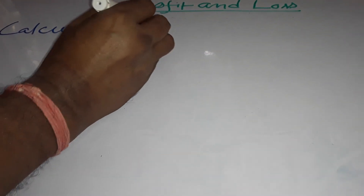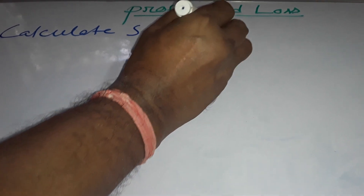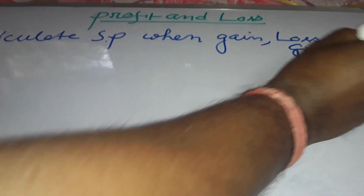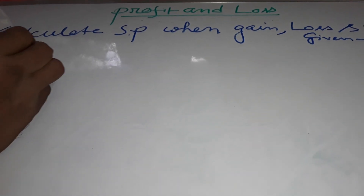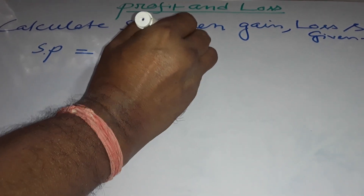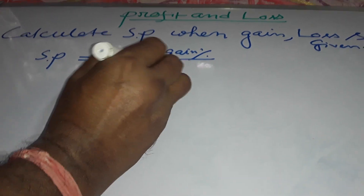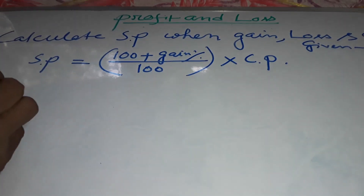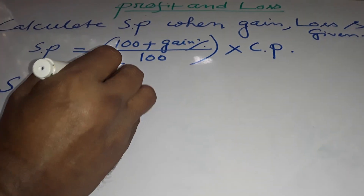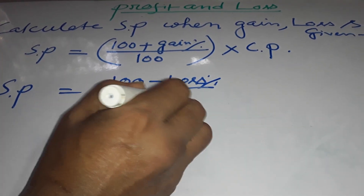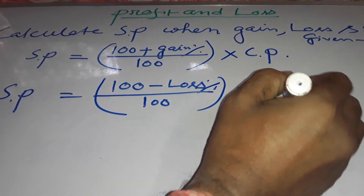To calculate SP when gain or loss percent and CP are given: SP equals ((100 + gain%) / 100) × CP. Again, SP equals ((100 - loss%) / 100) × CP.